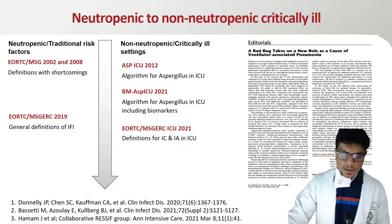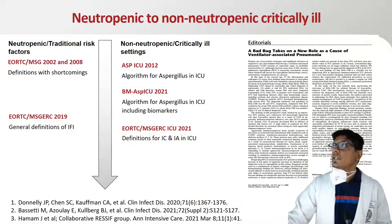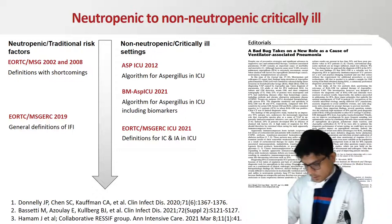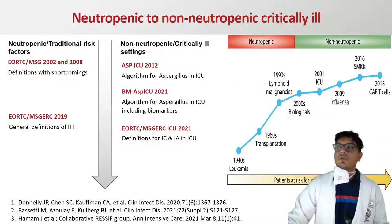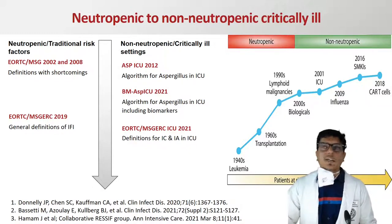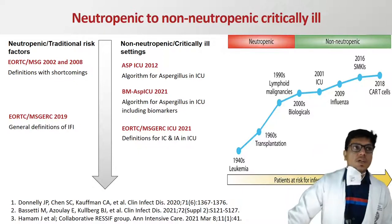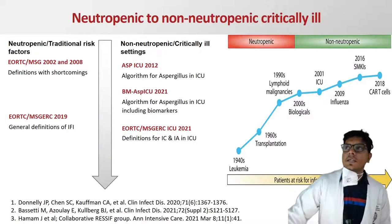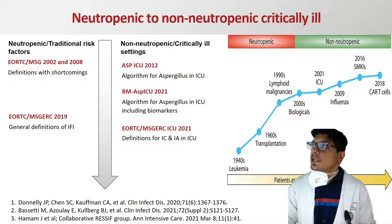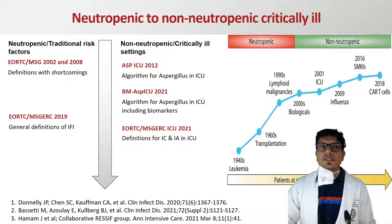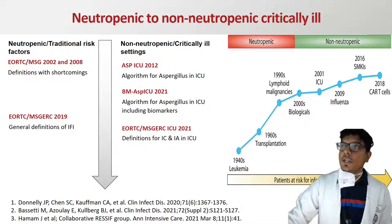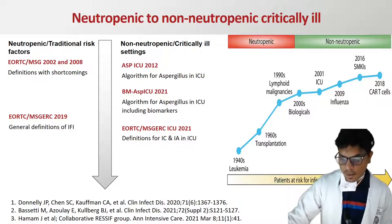An article published in 2008 described atypical presentations of invasive pulmonary aspergillosis in patients without classical risk factors — that is, non-neutropenic critically ill patients. Over the last two to three decades there has been an increase in the population at risk. In the 1990s and early 2000s, focus was on neutropenic patients with hematological malignancies. Over the last decade, other criteria have emerged including the ASPICU algorithm for non-neutropenic critically ill patients. Recent updates include EORTC 2019 for neutropenic patients and the BMSPICU 2021 and EORTC 2021 guidelines for critically ill patients.